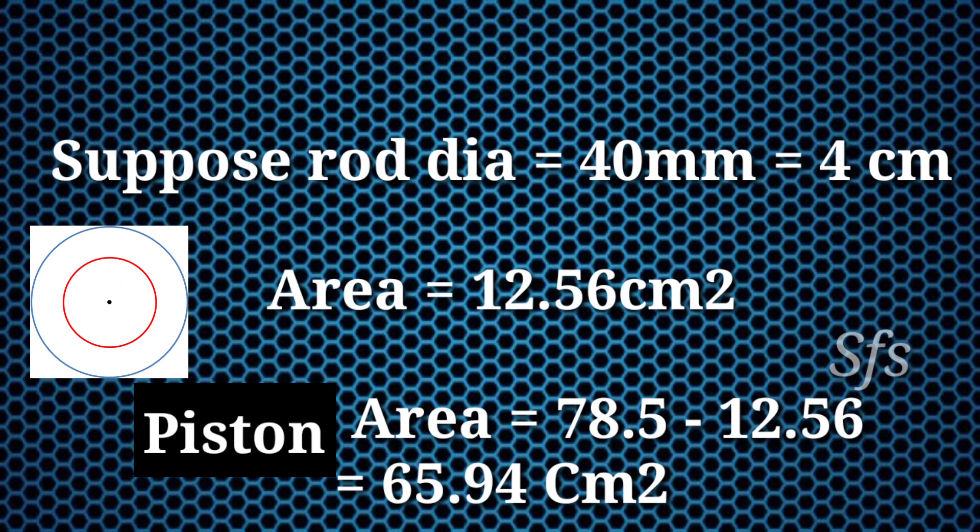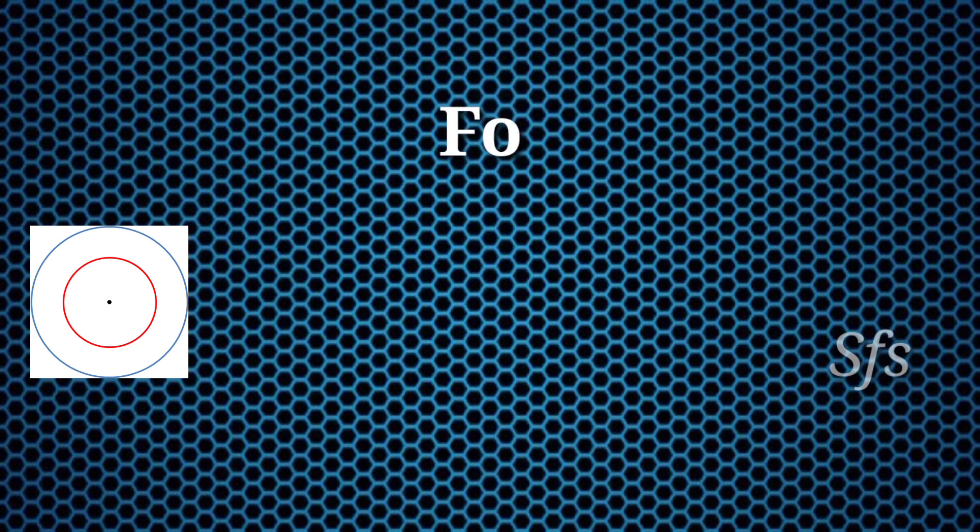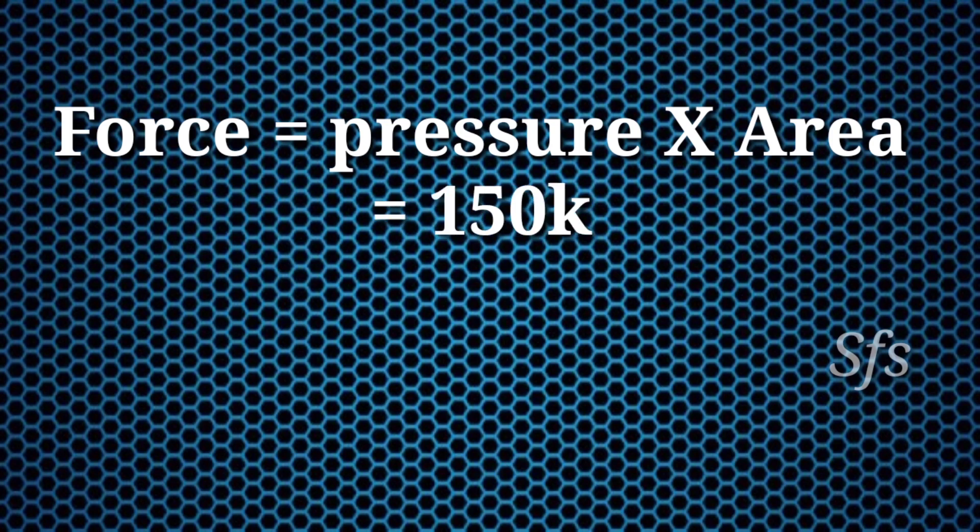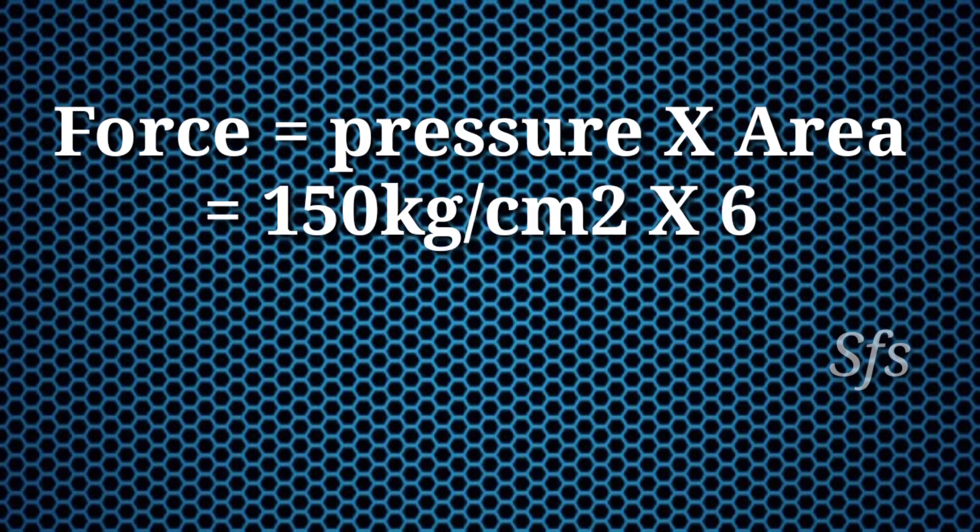The total piston area is 78.5 cm squared. The area of the rod is 12.56 cm squared, calculated with formula π r squared. We subtract the rod area from piston area: 78.5 minus 12.56 equals 65.94 cm squared.